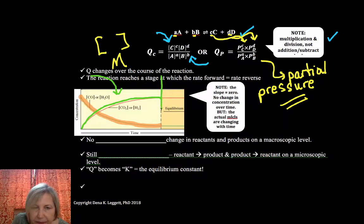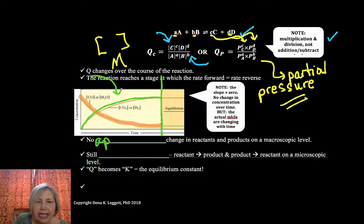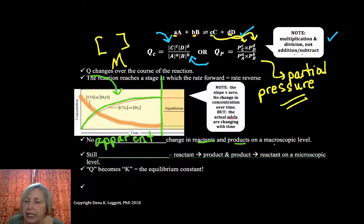But at some point we reach a point where the slope is zero. And so if concentration per time is my slope and that's my rate, that means that things appear to have stopped. The slope is zero. There's no change over time. And so if you were looking at this at a macroscopic level, there would be no apparent change.